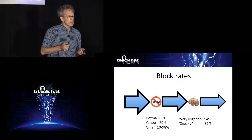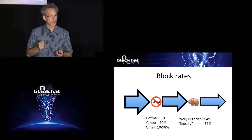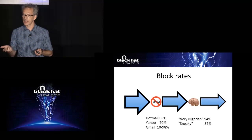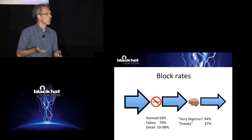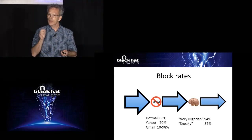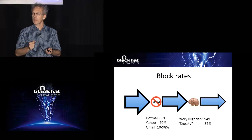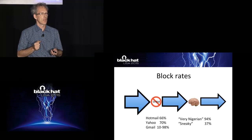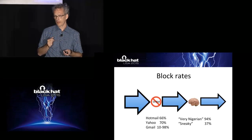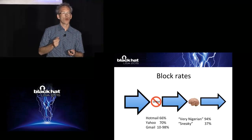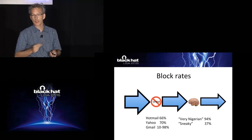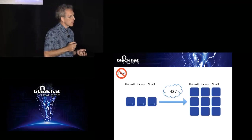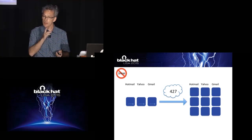The second part speaks about the human component. What are the block rates there? You've got the very Nigerian scams — 'I'm a Nigerian princess, I want to give you lots of money' — a very small portion of people think that is a good idea, about 4% of the population. You've got an order of magnitude higher rates for what I call the sneaky scam. Now let me talk about how this experiment was carried out. For the first part about email, we created a number of email accounts.